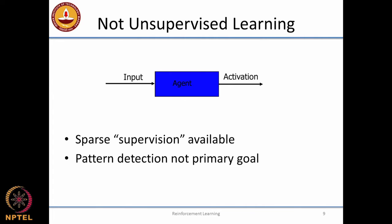It is also not unsupervised learning. In unsupervised learning, the agent receives input and figures out the patterns within it — pattern detection is the primary goal. In reinforcement learning, you have an evaluation and must produce an action in response to input. You might detect patterns to inform your response, but that is not the primary goal.